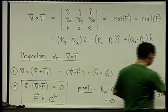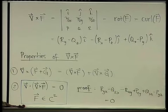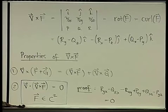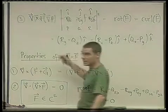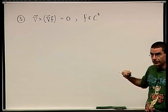The next property is of a similar nature: the rotor of a gradient equals zero, provided f is C2. If f(x,y,z) is a scalar function, its gradient is the vector (d/dx, d/dy, d/dz), and the rotor of that gradient is also zero. It's a very similar exercise — you calculate the rotor, and things cancel out. I'll leave the details for you to check.